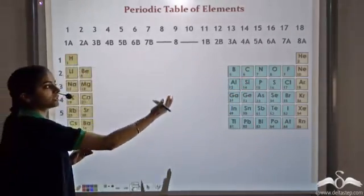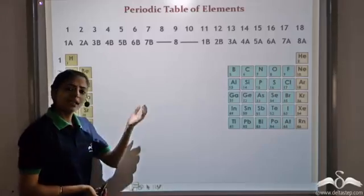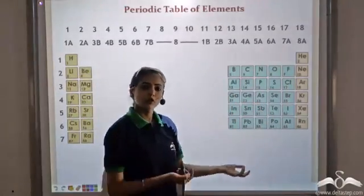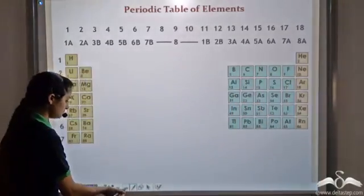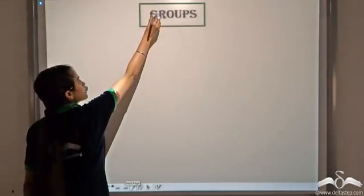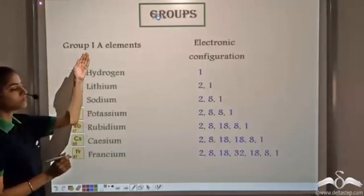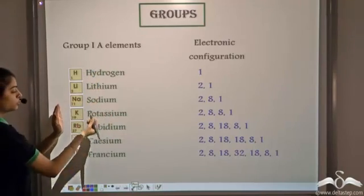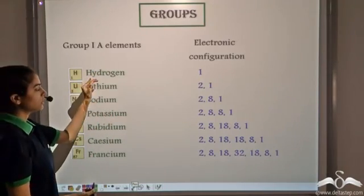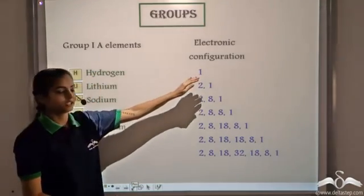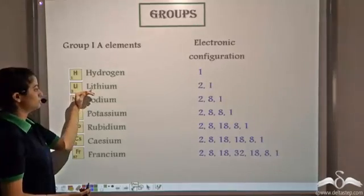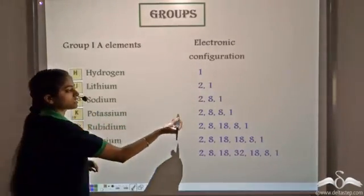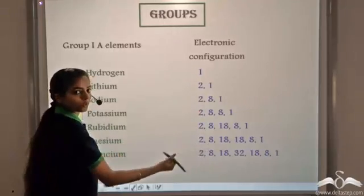The vertical columns are known as groups. Let's see if the elements belonging to any particular group follow any trend. The group 1A elements are: Hydrogen, with electronic configuration 1; Lithium, with electronic configuration 2,1; Potassium, with 2,8,8,1; and so on.